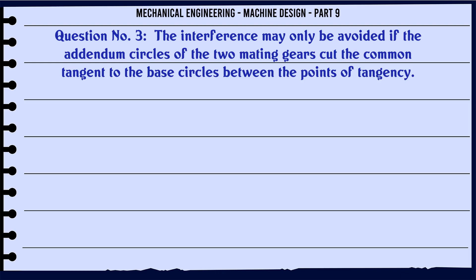The interference may only be avoided if the addendum circles of the two mating gears cut the common tangent to the base circles between the points of tangency. A. True. B. False. C. D. The correct answer is True.